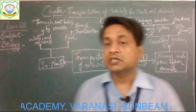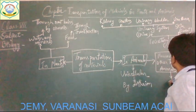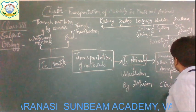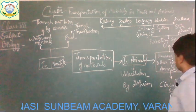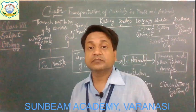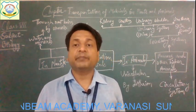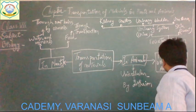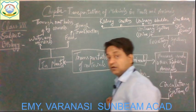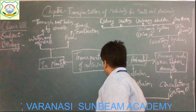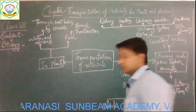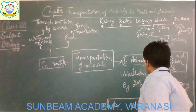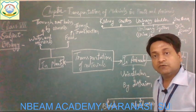The second system is the circulatory system. This circulatory system consists of three different types of substances: the first one is blood, the second part is blood vessels, and the third one is the heart.